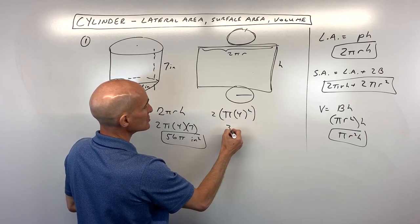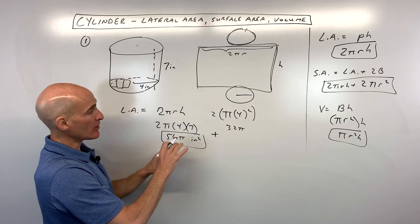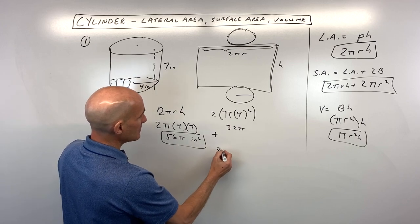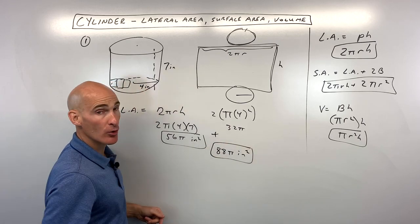But then you have 2 of them, so we have to double that, so that's going to be 16 times 2, which is 32π, plus the lateral area, which that's the area of the side. So that's going to give us 88π inches squared for the surface area, or the total area.